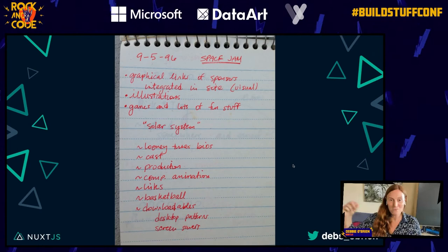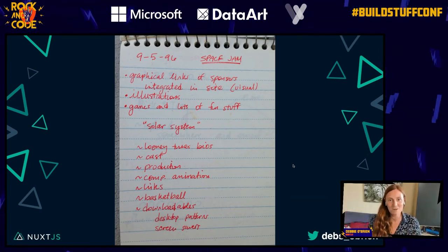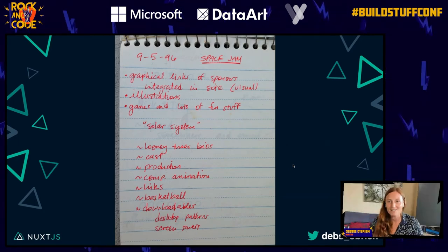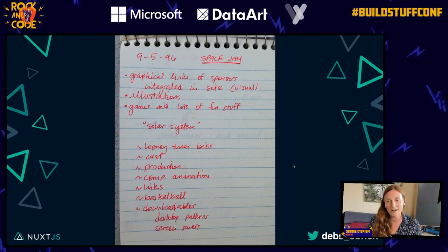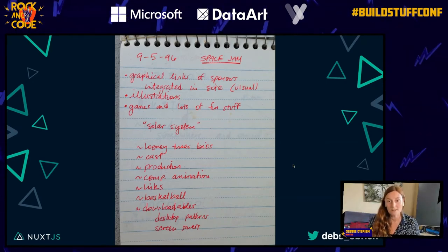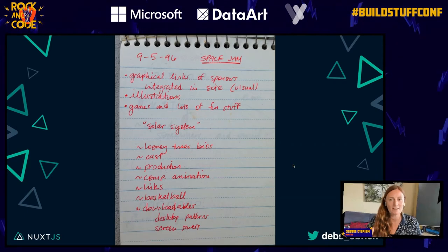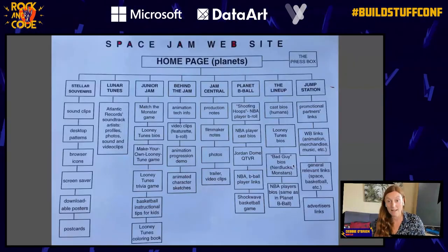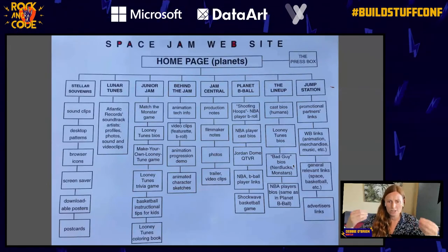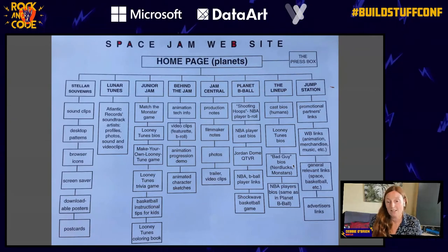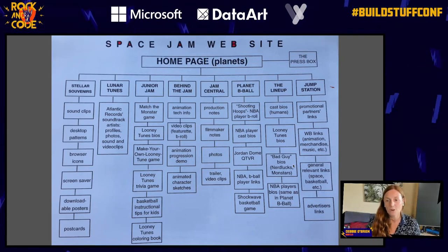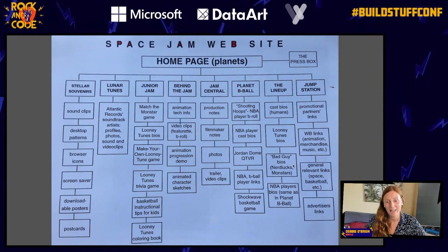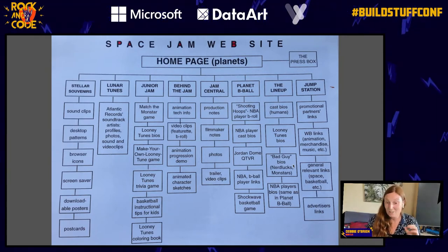This is their actual to-do list — on the 9th of May 1996: Space Jam, add graphical links of sponsors, integrate the site, illustrations, games and lots of fun stuff, solar system layout. This is their ideas coming onto paper and how they built this website. There's animated character sketches, trailer and video clips, a showey basketball game, and a Looney Tunes trivia game. This is a static site from 1996, and look at what they were able to do.